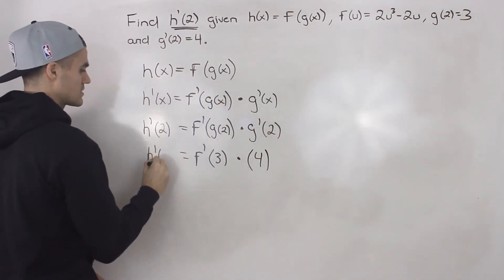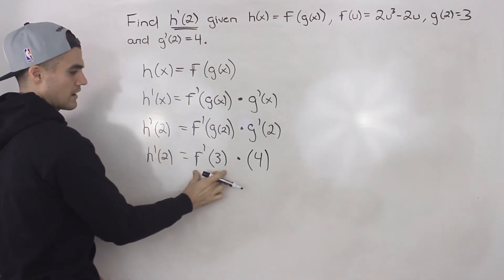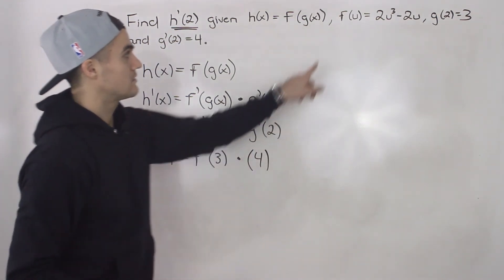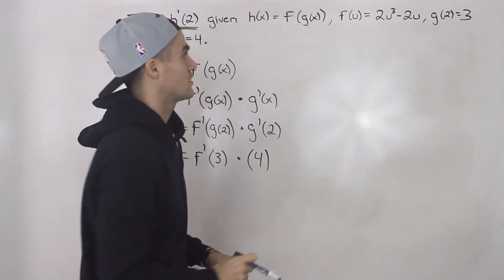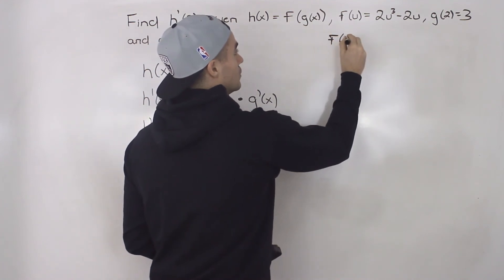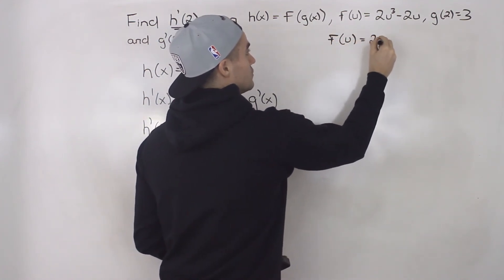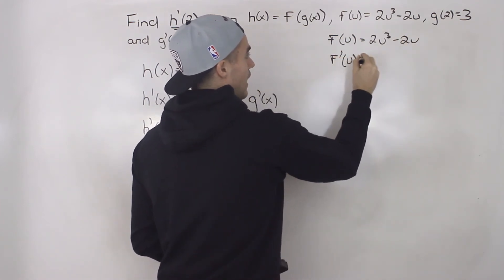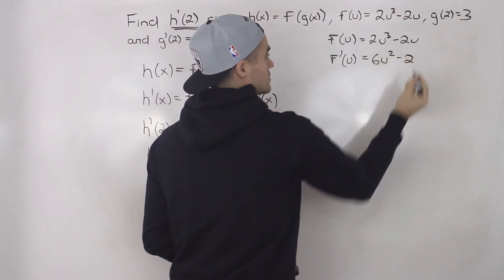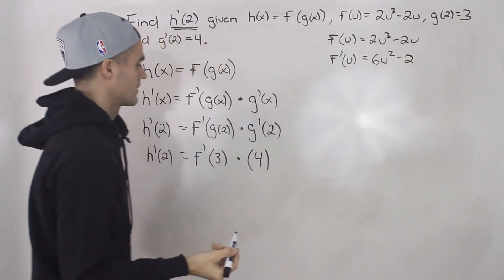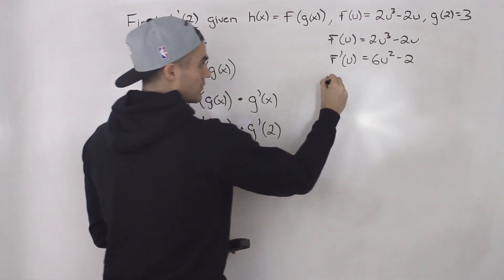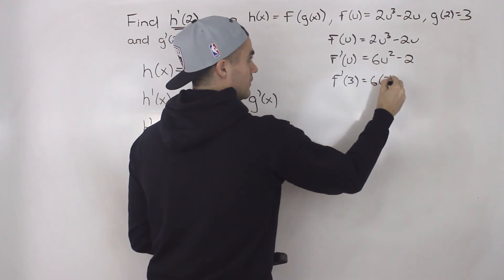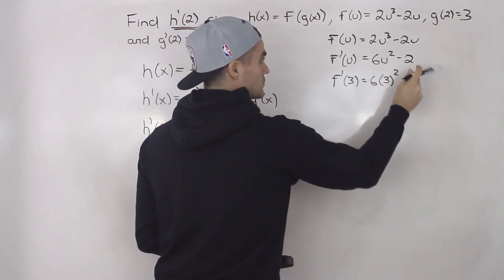Now the question is how do we find a value for f'(3)? Well notice that the function f we're given here. We know that f(u) is 2u³ - 2u, so the derivative of f is going to be 6u² - 2. We can find f'(3) by just plugging in 3 for the u values in the derivative.